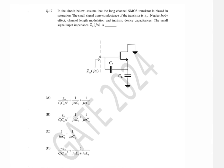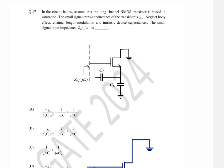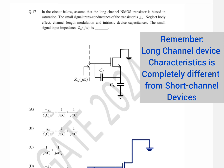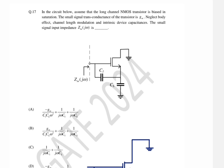Today I am going to discuss a GATE 2024 question. There is a long channel NMOS transistor biased in saturation. Since it is biased in saturation, no DC bias voltages or bias currents are given — only the AC equivalent circuit is given.